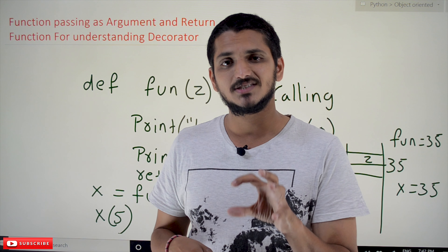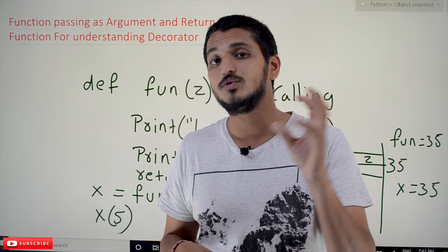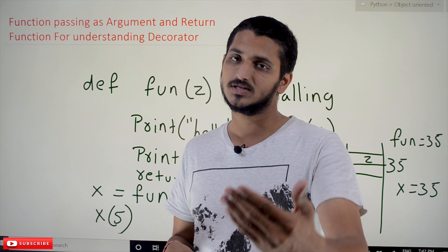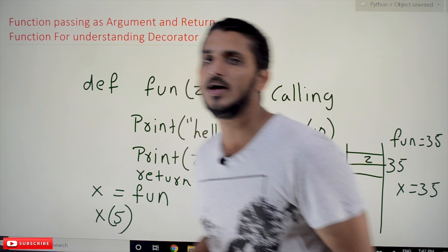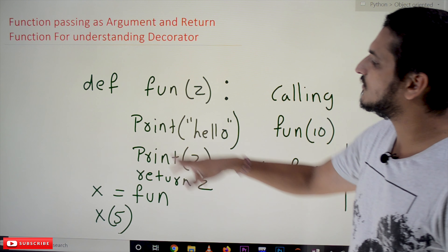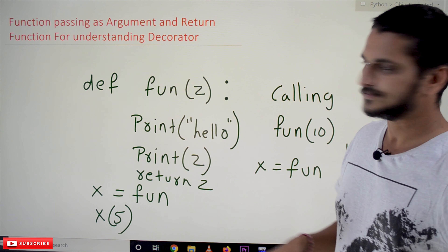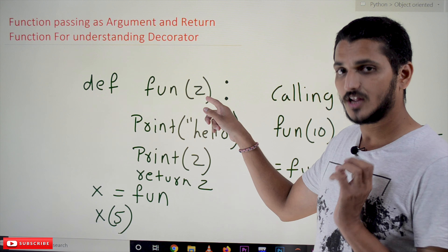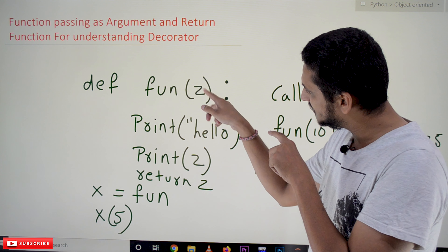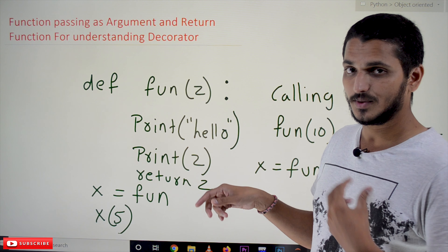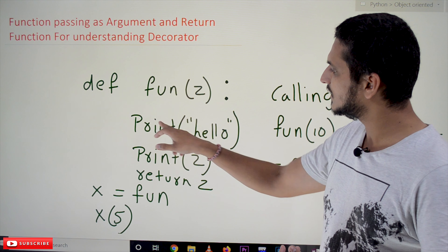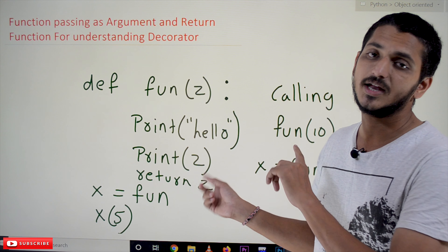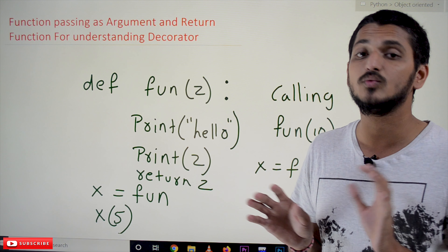Let's take an example and understand. Let's refresh the concept of how space is assigned, then we go into how we will take some examples and how functions are passed as variables to other functions. We have defined a function: def fun(z). This is our function name and we are passing a variable called an argument that is saved in variable z. Print hello, print z, and we are returning the value of z.